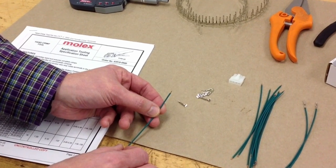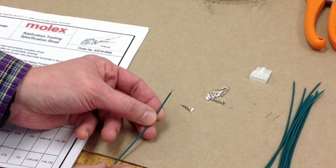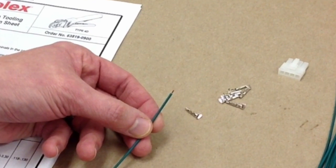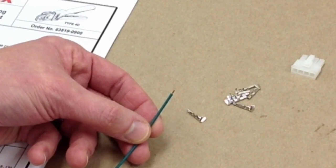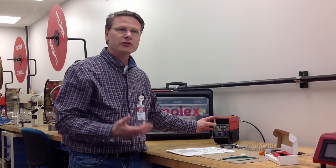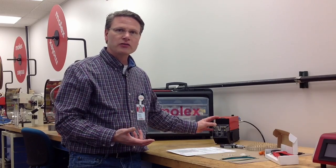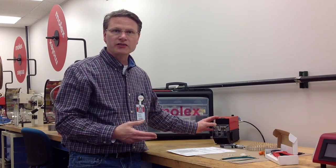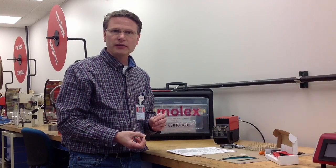Another area to look at is the strip length. Making sure that the proper size is important to crimp quality. But make sure that you're not nicking strands. Make sure that the insulation shoulder is nice and square, and you're not getting a lot of stringers when you strip that insulation.